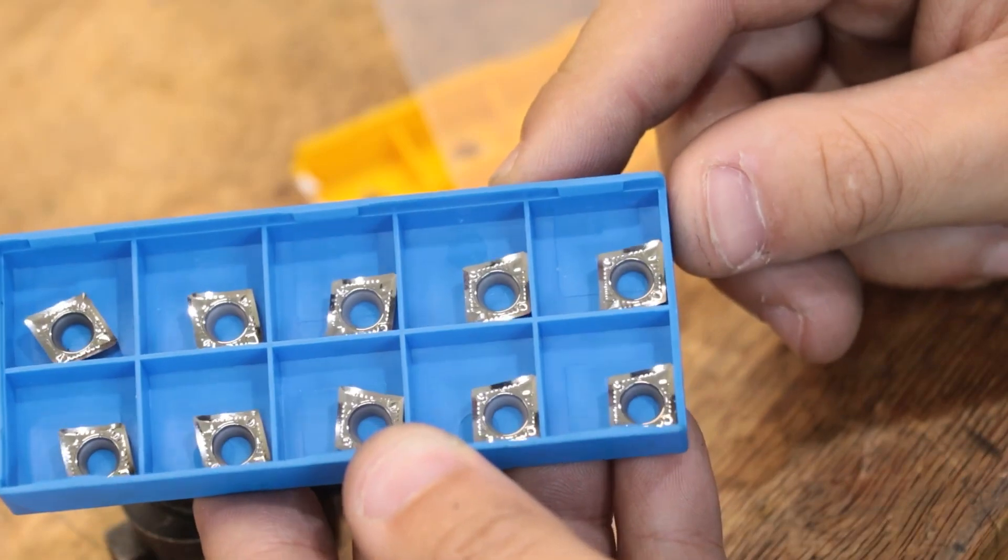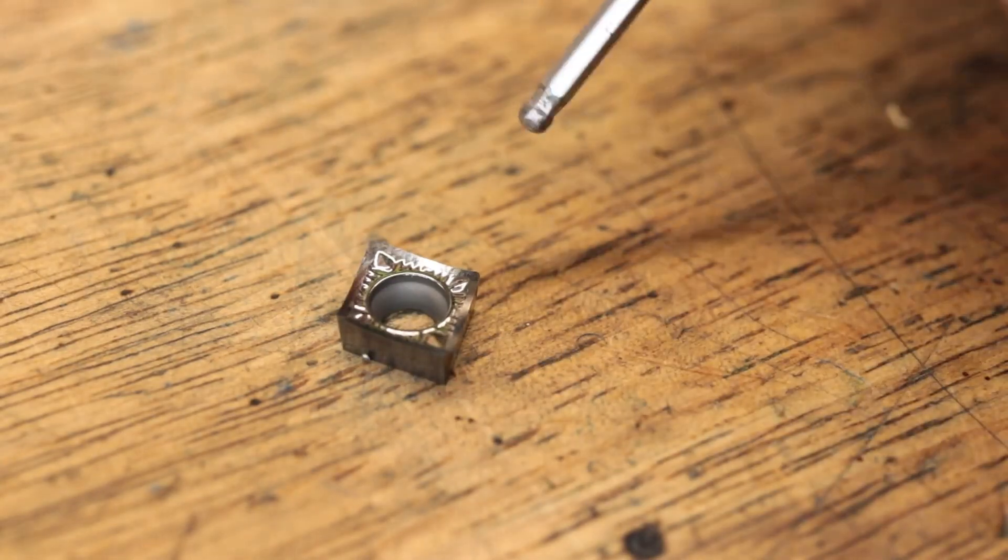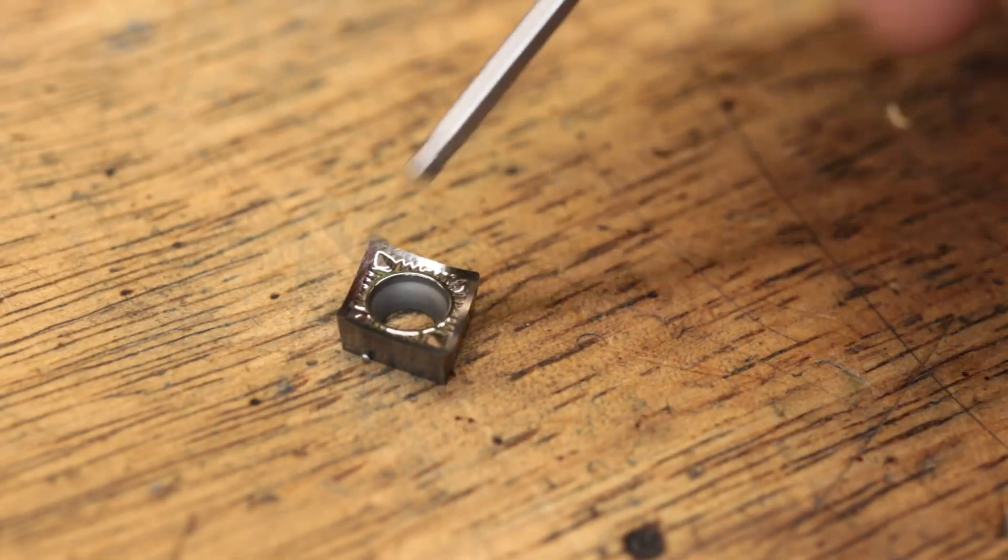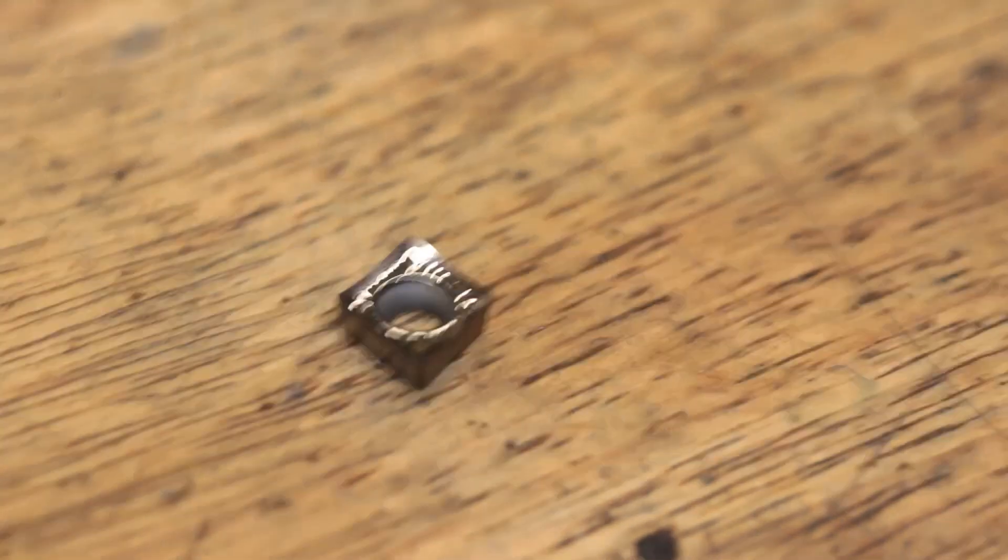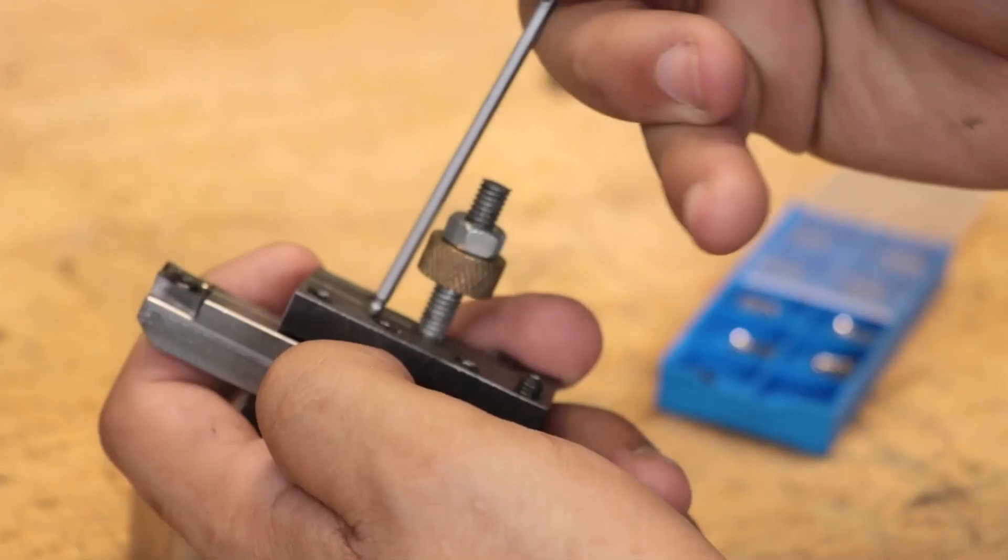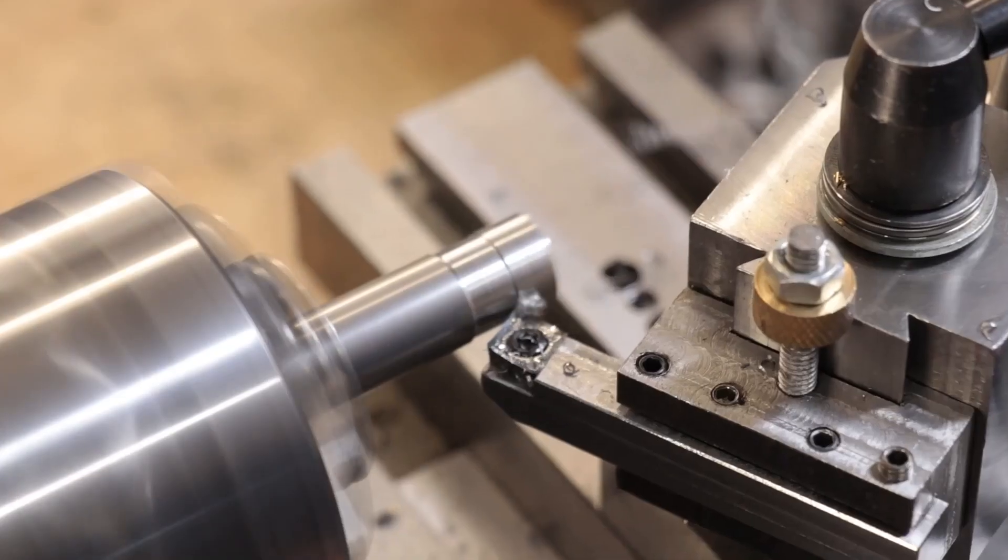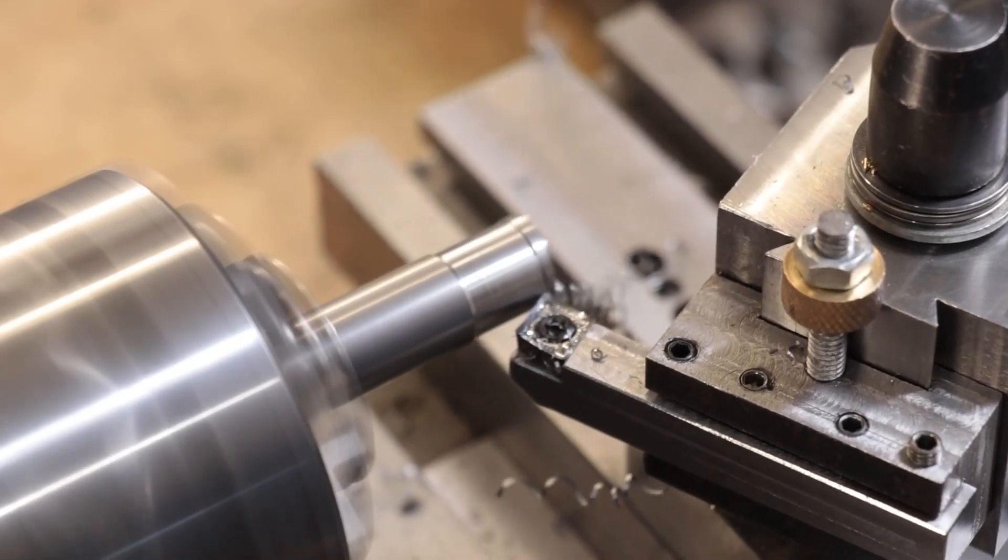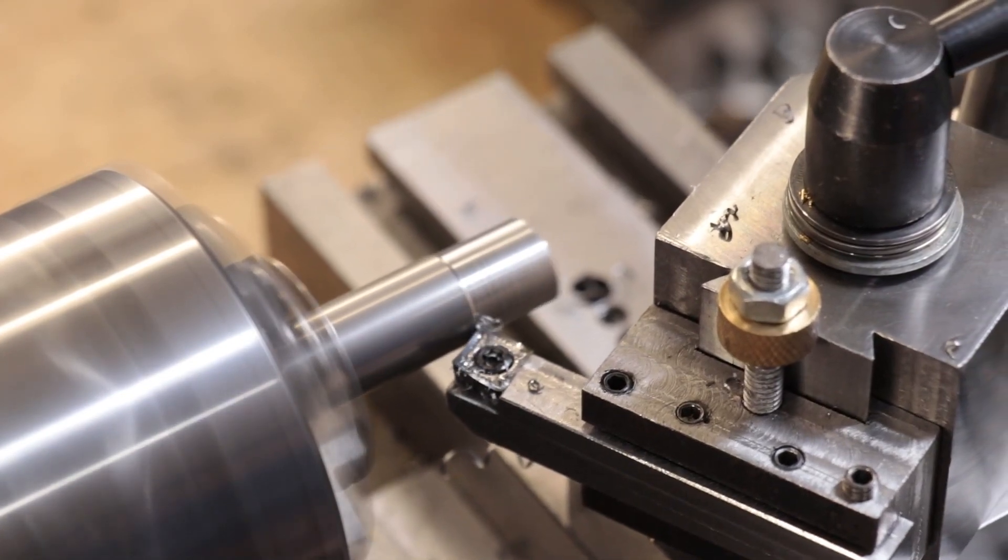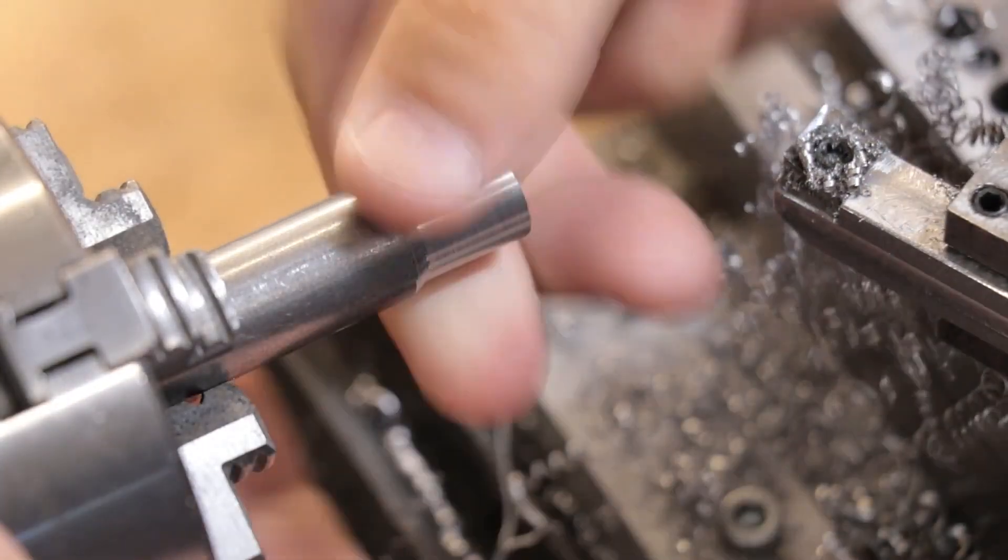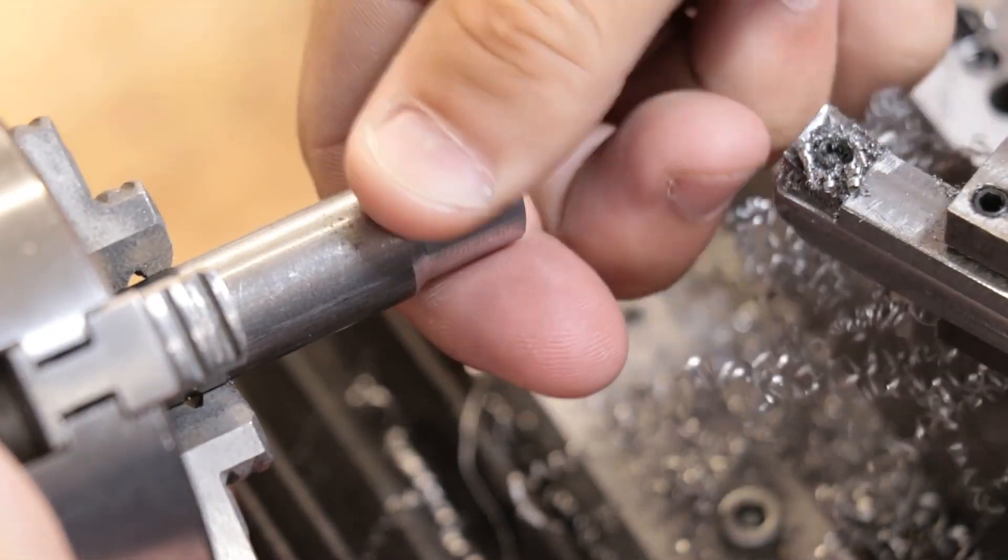Granted, these are no-name inserts that I picked up off the internet for about 15 bucks, so I can't expect all that much from them. However, some of the import inserts that I've paid about the same amount of money have worked remarkably well. To see if it was the inserts, what I did was I put the tool holder in the lathe and then I turned down some 1214, which is one of the easiest materials to get good surface finishes with. And whilst I got close, I didn't get anywhere close to something that I'd call shiny. So I think the problem here is those inserts.